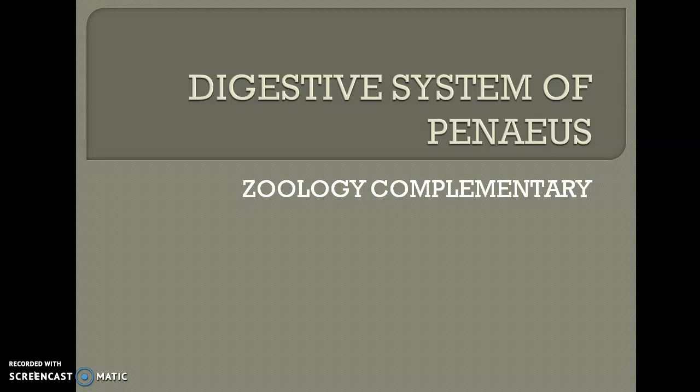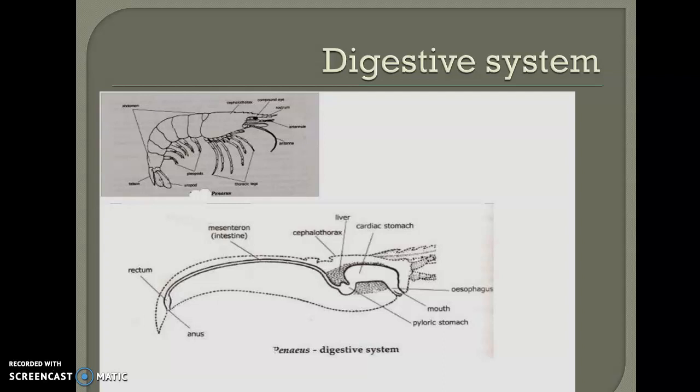Good morning. We will be studying the digestive system of Penaeus. The digestive system of the prawn consists of an alimentary canal and a very complex digestive gland. The alimentary canal is seen here, and the gland is called the liver or hepatopancreas.